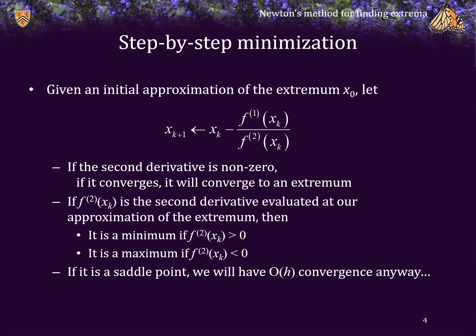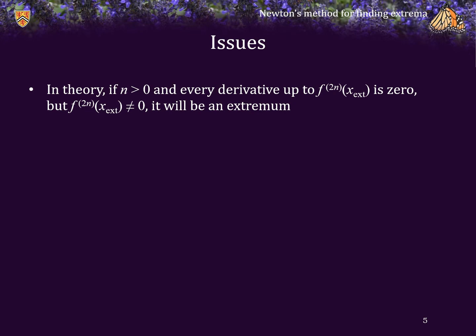If it is a saddle point, then the second derivative is going to be zero anyway, and consequently we will revert to order h convergence, so it will not be converging order h². Now we can't simply rely on checking the second derivative, because in theory, if n is an integer greater than zero and every derivative up to the 2nth derivative is zero at a point but the 2nth derivative is nonzero at that point, then that point will actually be an extremum. Fortunately, these situations do not generally occur in engineering.